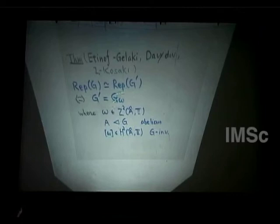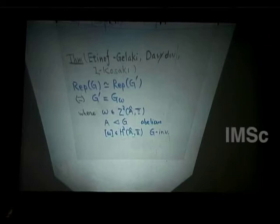There is a nice characterization of this situation found independently by Eppin-Okeraki, Davidoff, and Kousaki. You consider two finite groups G and G'. They have equivalent representation categories if and only if they are related via the following construction: start with an abelian normal subgroup A and a G-invariant second cohomology class ω of the Pontryagin dual Â with coefficients in the torus group.